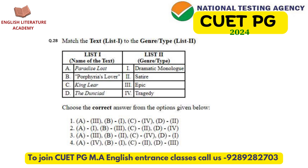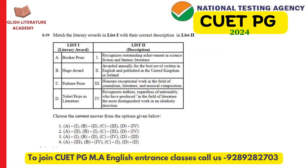Question 29 is again a matchmaking question where List A contains the names of literary awards and List B contains descriptions of those awards.